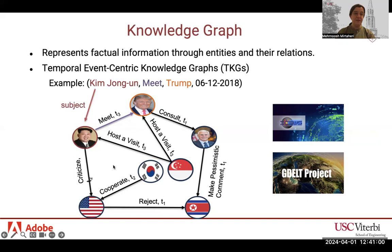In a subgraph example of ICEWS, Kim Jong-un is a subject entity connected to Trump as an object entity through the relation 'meet.' This tuple indicates the meeting between Kim Jong-un and Trump in June 2018.